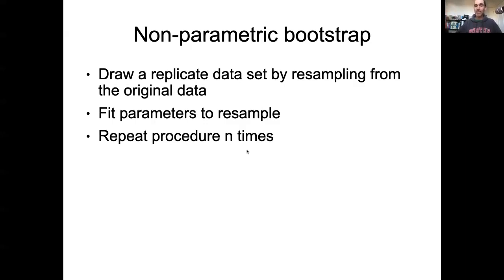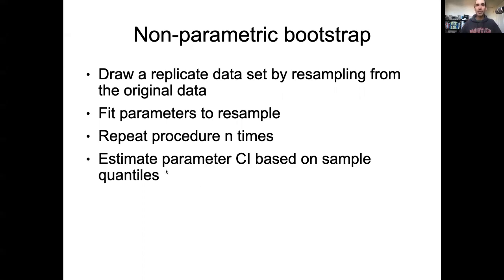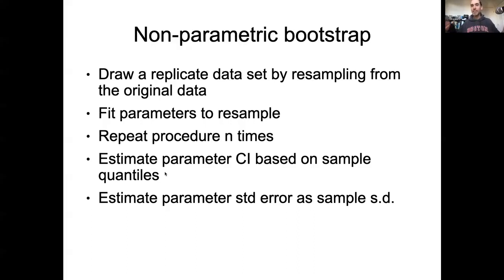We then repeat this procedure n times. Draw a replicate, fit the parameters, save the estimate of the parameters. Every iteration through this, we're saving our estimated parameters. Once we have these n samples of the estimated parameters, we can use those to estimate our confidence interval based on the sample quantiles, estimate standard error based on the sample standard deviation, things like that.